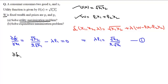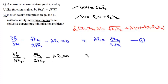Differentiating with respect to x2 gives ∂L/∂x2 = √x1 / (2√x2) − λ·p2 = 0, so λ·p2 = √x1 / (2√x2). This is our second equation.